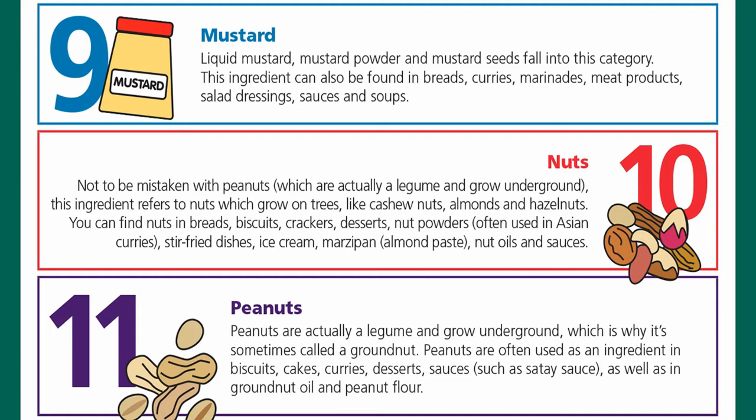Number eleven is peanuts. As mentioned, they're actually a legume and grow in the ground — that's why they're sometimes called groundnuts. Peanuts are often used as an ingredient in biscuits, cakes, curries, desserts, sauces such as satay sauce, as well as in groundnut oil and peanut flour.